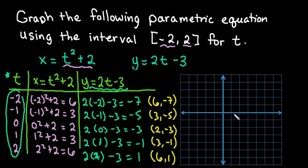So I would go over to 6 and then turn and go down 7. We would go to 3 down 5, 2 negative 3, 3 negative 1, and then our last point would be at 6, 1.